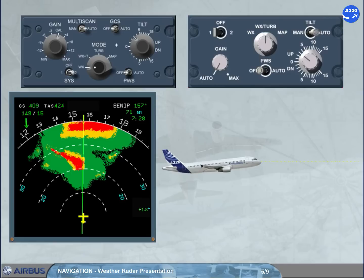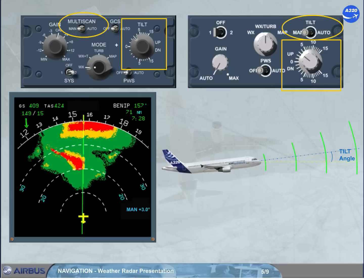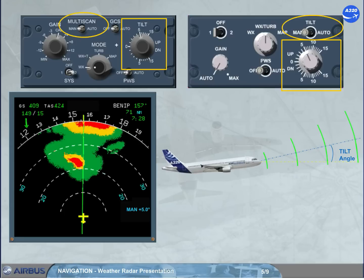The installed tilt switch, or multi-scan switch: when it is in auto, allows the ADIRS to automatically select an optimized tilt. When it is in man, allows the tilt knob to be used to adjust the radar antenna relative to the horizon seen by the ADIRS. Note: radar 1 is on ADIRS 1, and radar 2 is on ADIRS 2.